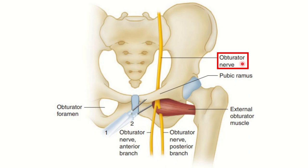In this picture we can see the obturator nerve passing on both lateral sides. There is no reason for the obturator nerve to come to this point, so the obturator nerve is usually not located within the deep perineal pouch.